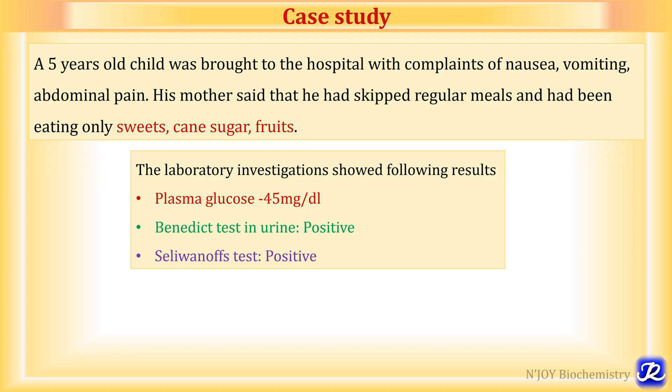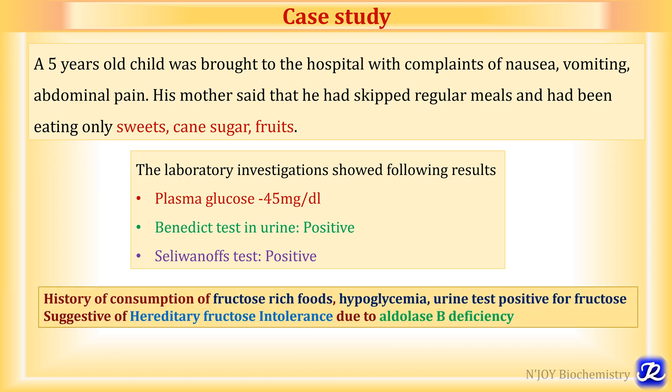Seliwanoff's test differentiates between aldo sugars and keto sugars, and it was also positive, meaning fructose is excreted in urine — fructosuria detected. History of consumption of fructose-rich foods, along with hypoglycemia and urine tests positive for fructose, are suggestive of hereditary fructose intolerance due to aldolase B deficiency. I hope this video will be useful to you. Thank you for watching.